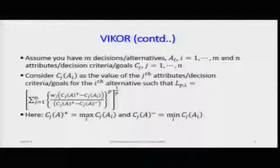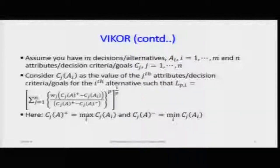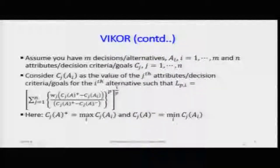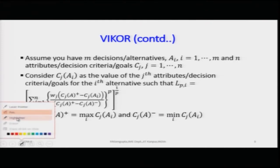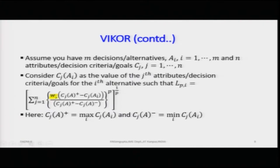We consider the distance function as C(J, A_i), where C implies criteria and A implies alternative. C_J(A_i) represents the overall priority value arising from the relationship between the J-th criterion and the i-th alternative. We assign weights W_J for J = 1 to n, and in the normalization formula the denominator is the difference between the max and the min values.